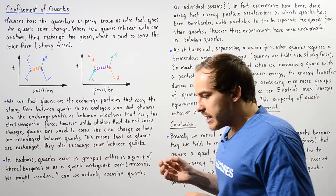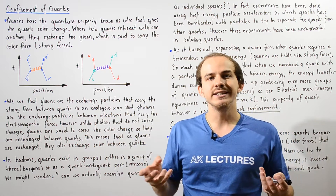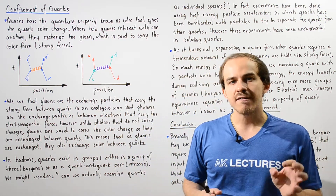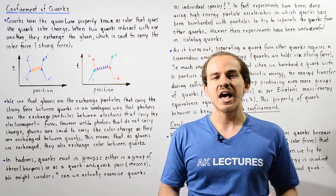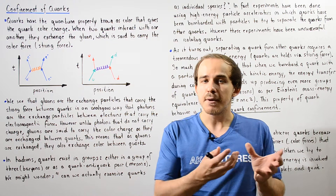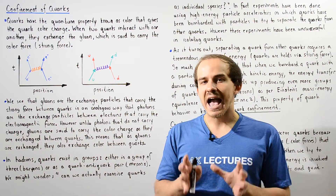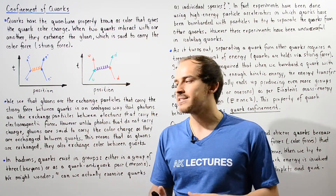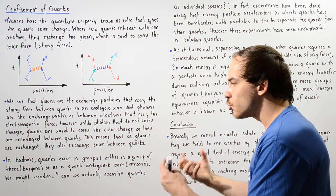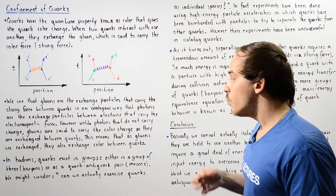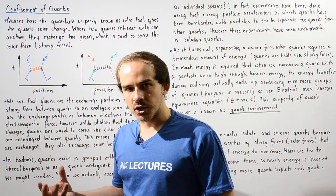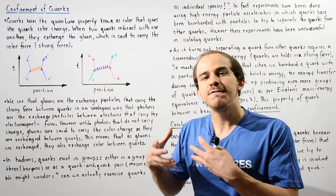All particles that exist in nature are broken down into two categories. We have fundamental particles such as gluons and photons, and we also have hadrons, which are particles that have internal structure — they are composed of quarks. We have two types of hadrons: baryons, which consist of three quarks, and mesons, which consist of a quark-antiquark pair. So in hadrons, quarks exist in groups.